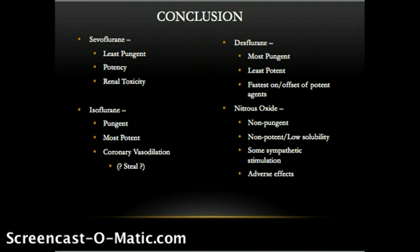Desflurane is the most pungent and may cause sialorrhea, breath-holding, and coughing through severe airway irritation. Desflurane also may cause tachycardia and hypertension due to sympathetic stimulation. It is the least potent and least soluble halogenated ether, which provides faster onset and washout of anesthesia. Nitrous oxide is a non-pungent anesthetic gas with very low solubility and provides some sympathetic stimulation. It is linked to numerous adverse effects but is a very useful clinical adjunct.